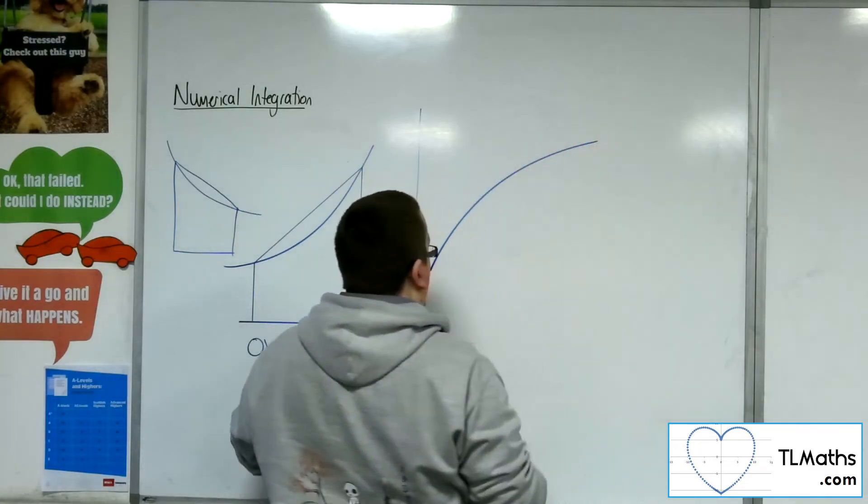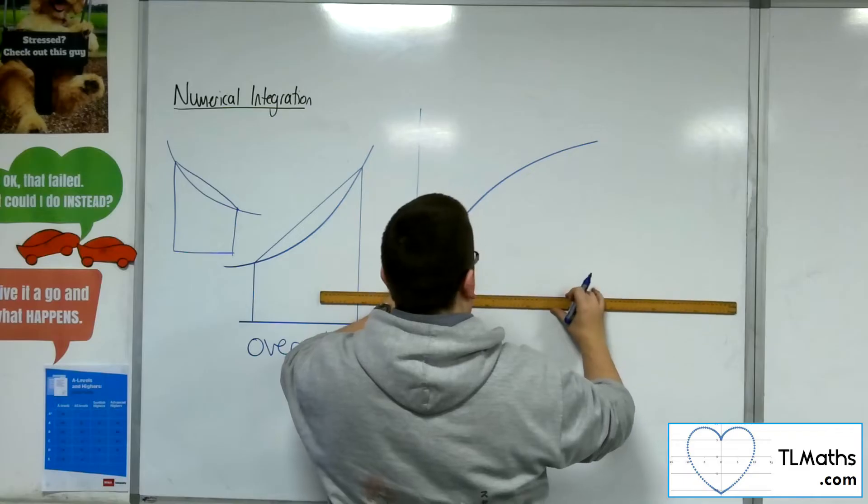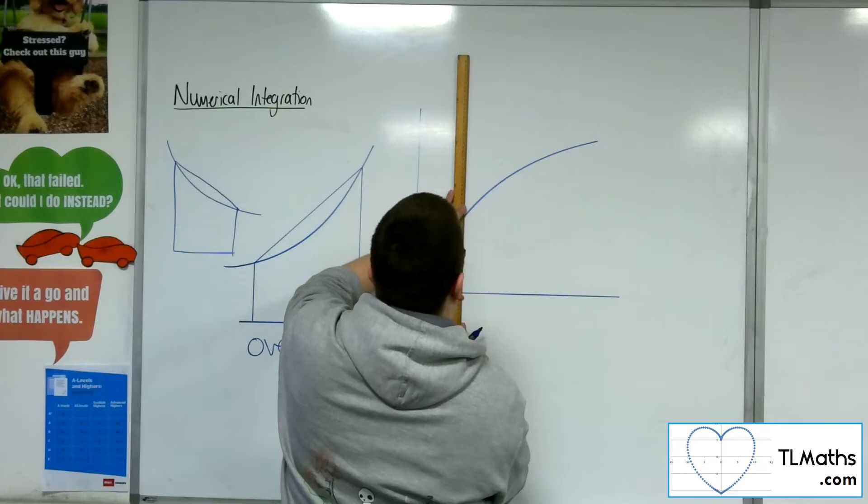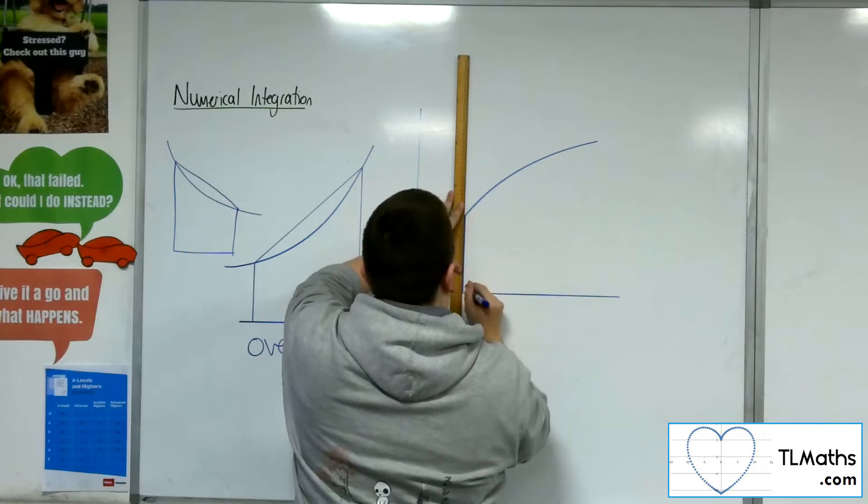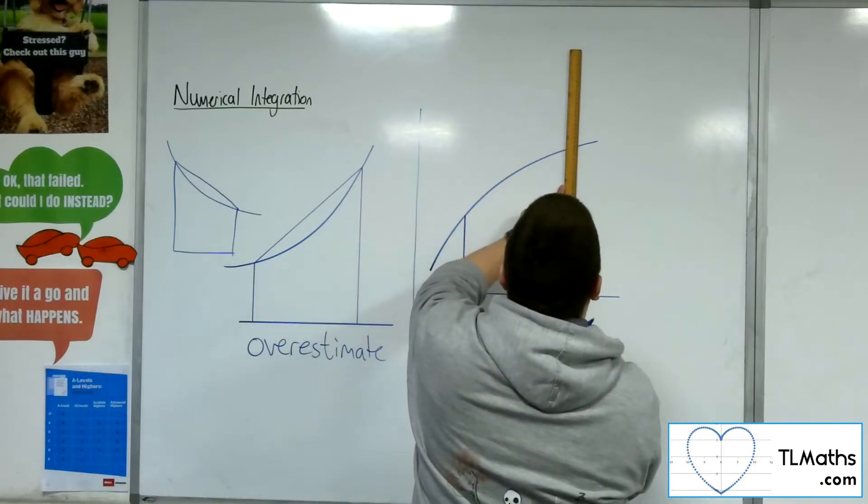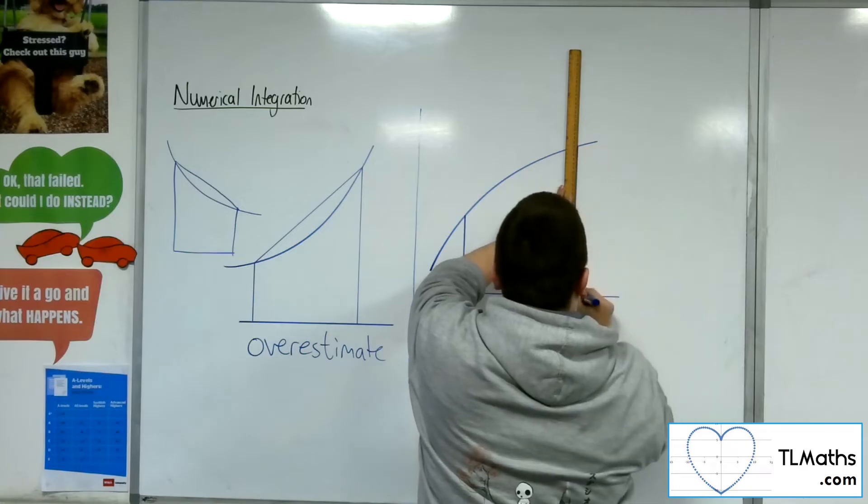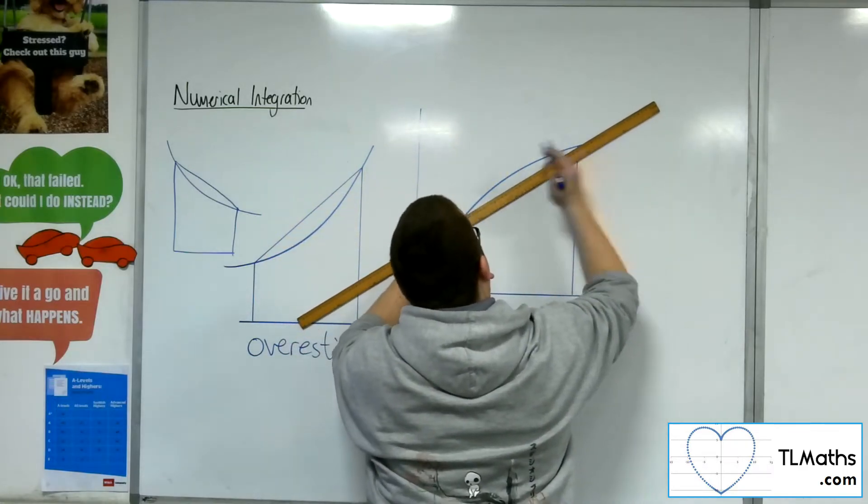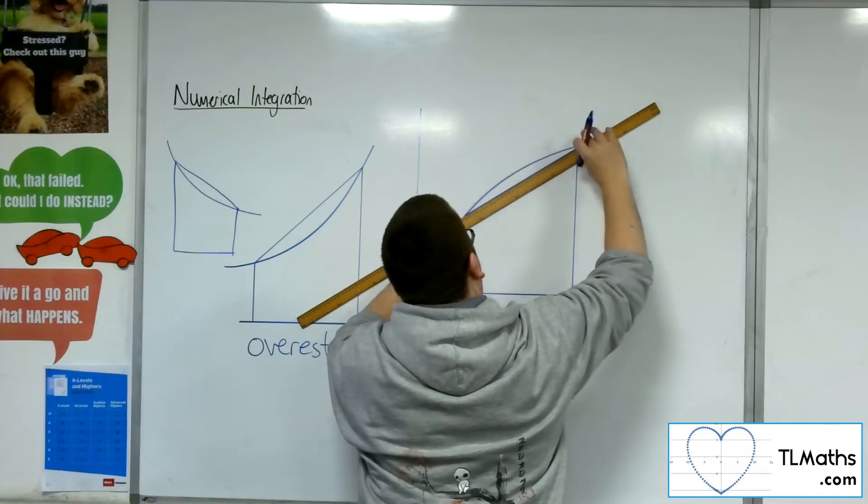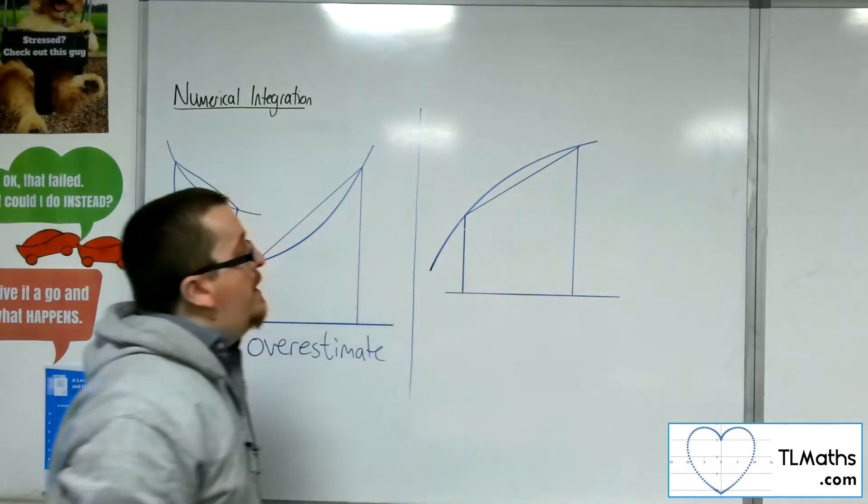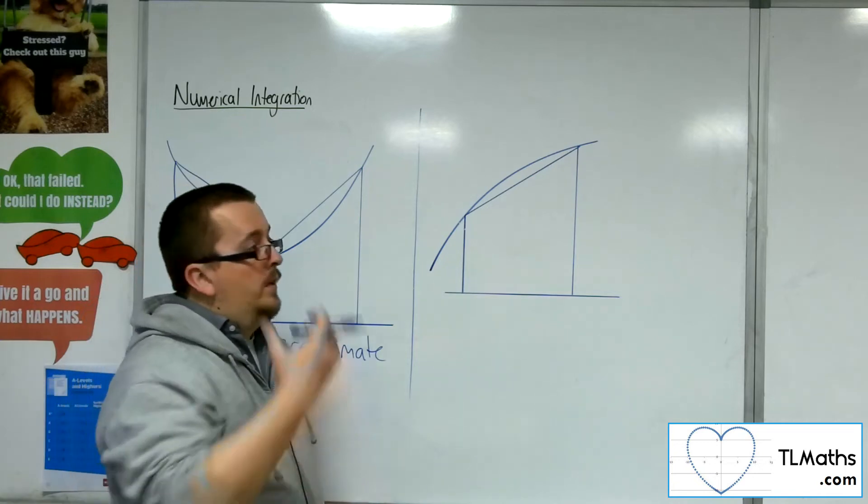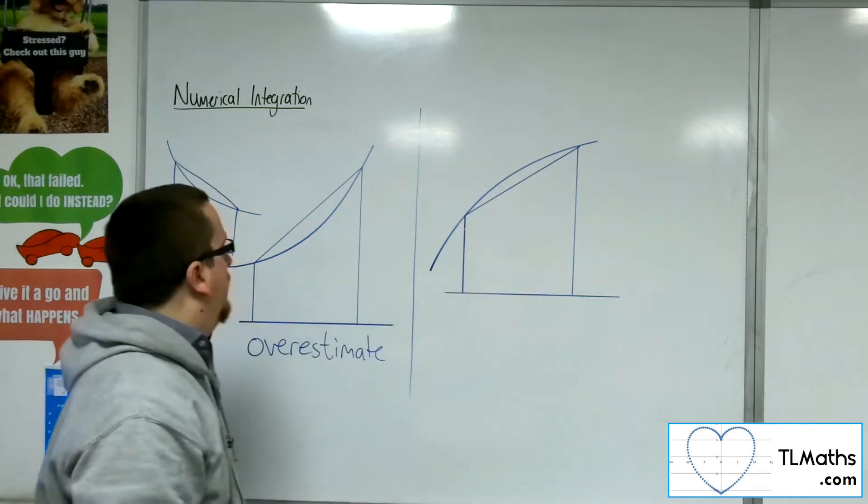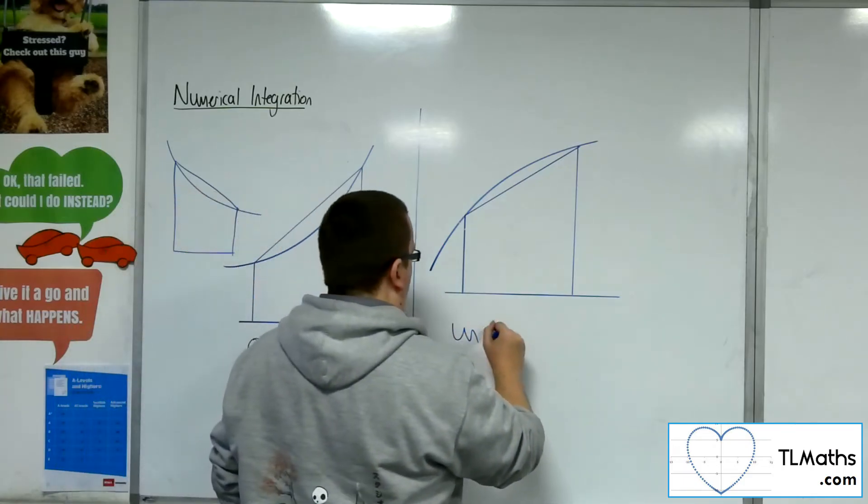So if it looked like that, then if I draw a trapezium like so, and join up those two points, you can see that clearly the area of the trapezium will be less than the area between the curve and the x-axis. And so this would be an underestimate.